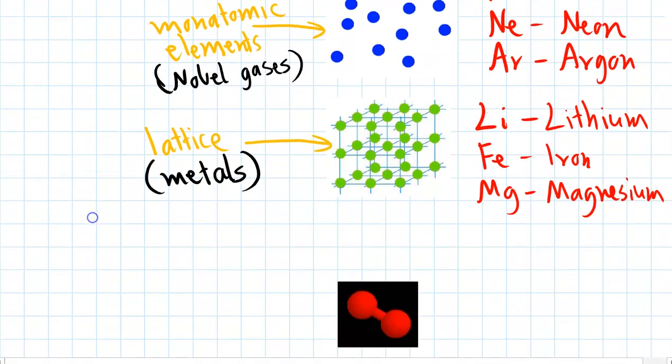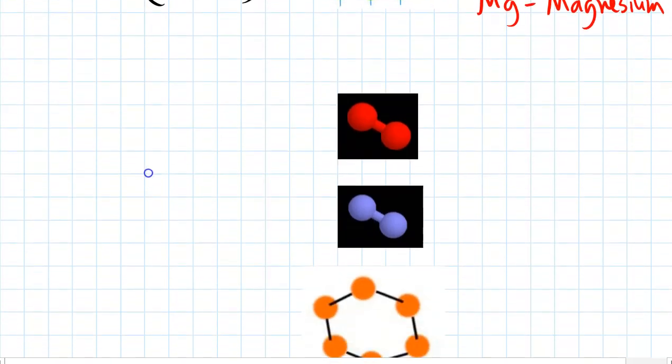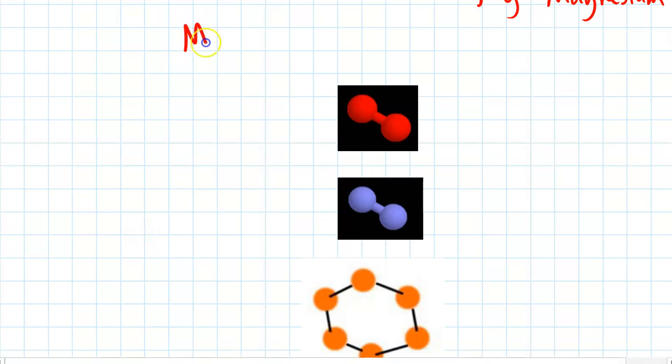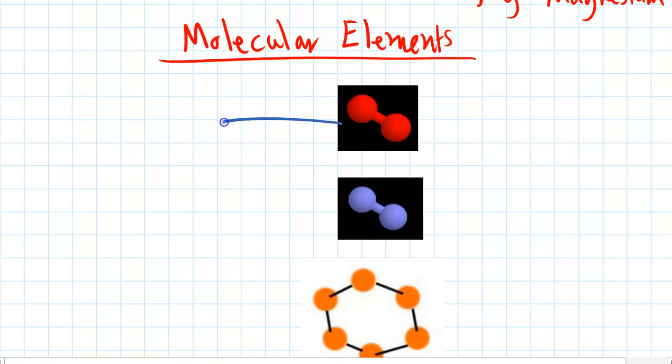But when we get to elements that exist as molecules, we actually need to do something slightly different. So we're going to group all these elements into molecular elements. Elements that exist as molecules. So here's a couple here. Red atoms normally represent oxygen. And oxygen, nearly all the time, it exists as a molecule with two atoms. And that's called a diatomic molecule.